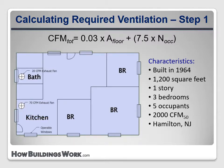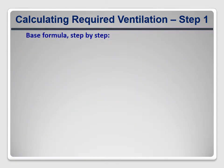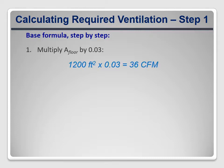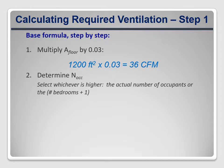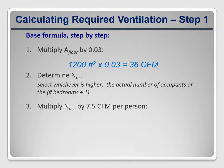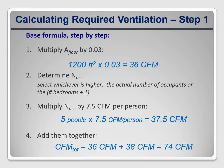Just like the new construction example, our first step is to calculate the total desired ventilation rate. The first part of the equation deals with floor area, so we multiply 1200 square feet by 0.03, giving us 36 CFM. For the second part, we consider occupants: there are five, which is higher than three bedrooms plus one, so we multiply five occupants by 7.5, giving 37.5 CFM — rounded up to 38. So we need 36 plus 38 for a total of 74 CFM of total desired ventilation.